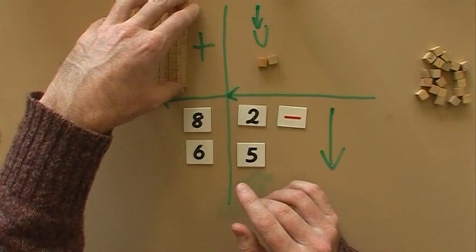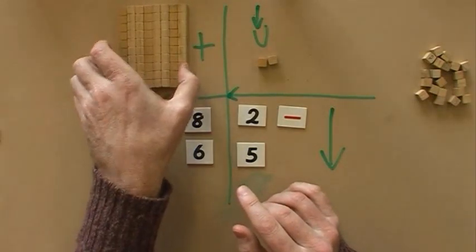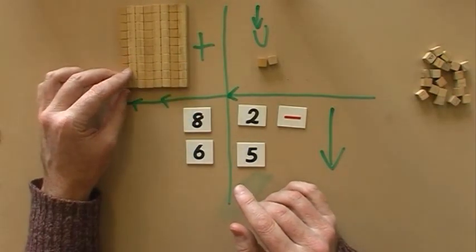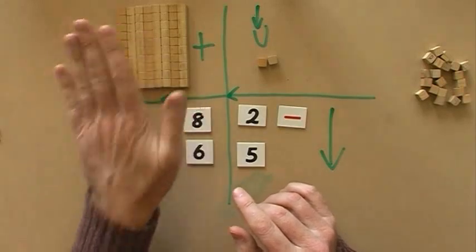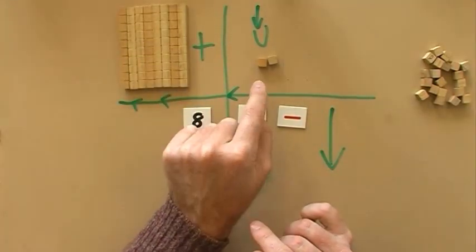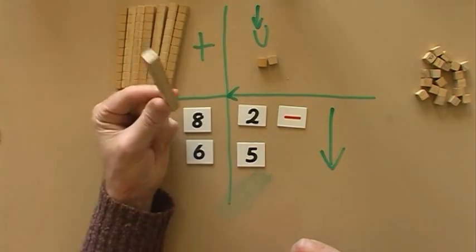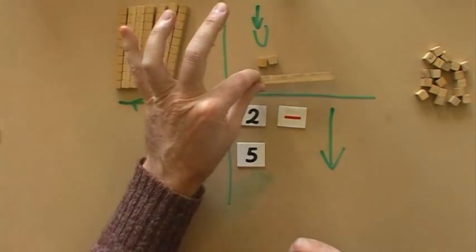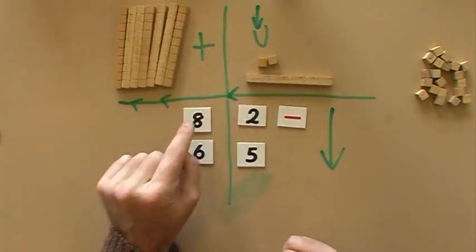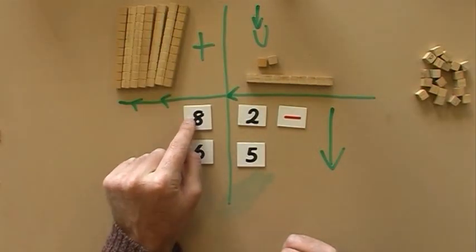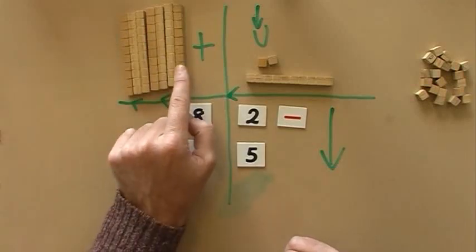You can also think of it as trading if that helps you. It's decomposition if you want to get fancy. Think of it as carrying if you like. But whatever it is, you've got to get some more stuff into the units column because you don't have enough to take away the 5. So we take 1 away. There it is. I'm going to put it in here. This number has now changed. I don't have 8 here anymore. What do I have?